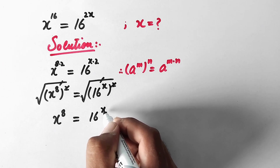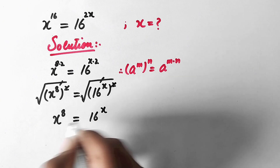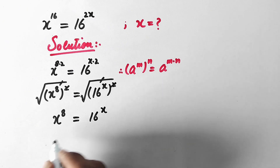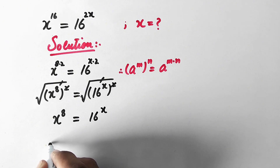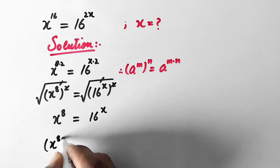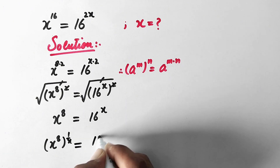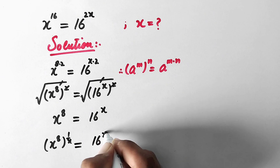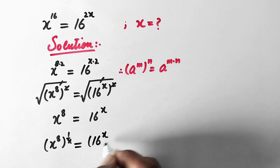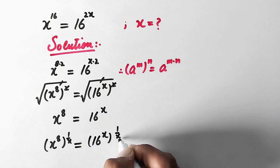Now to eliminate this x we will take the power of 1 over x on both sides. So here we have x to power 8 to power 1 over x is equal to 16 to power x to power 1 over x.